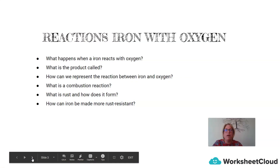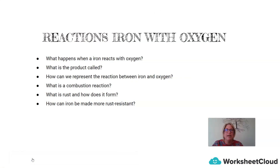The work we're covering in today's lesson is the reactions of iron with oxygen. We're going to have a look at what happens when iron reacts with oxygen and what the product is called, how we can represent the reaction between iron and oxygen, what a combustion reaction is, what rust is and how it forms, and how iron can be made more rust resistant.